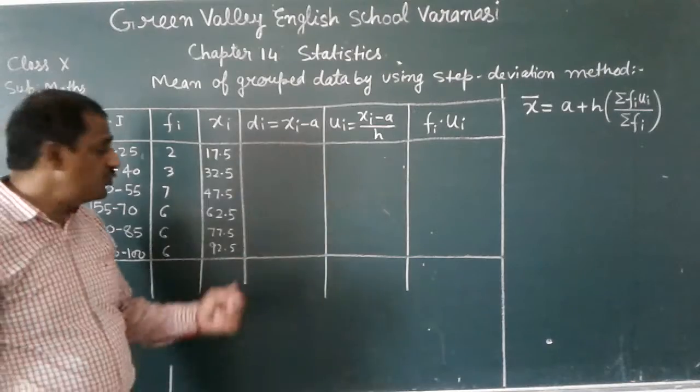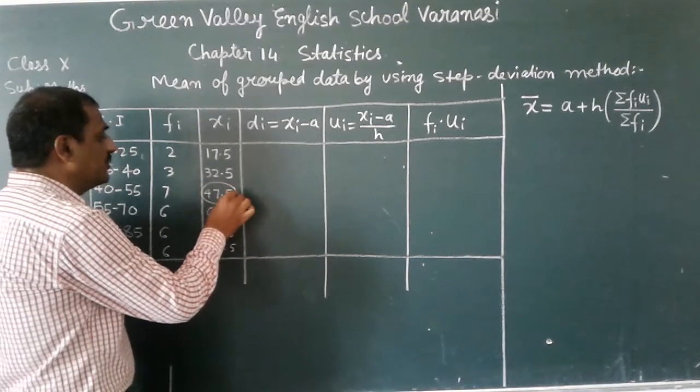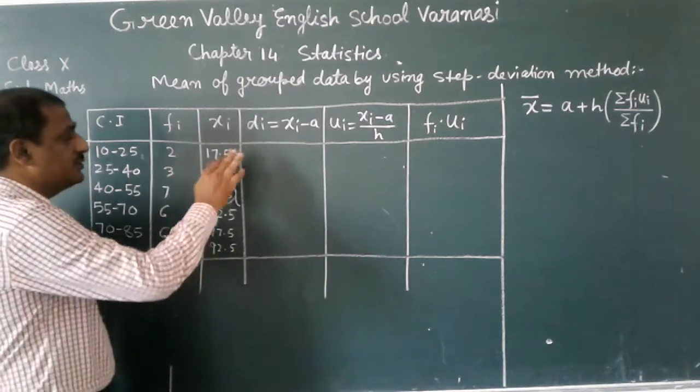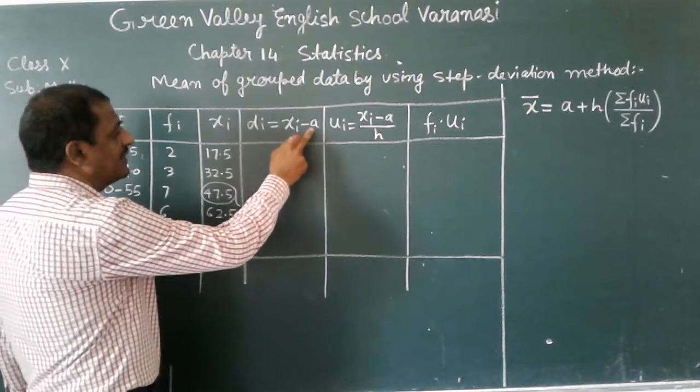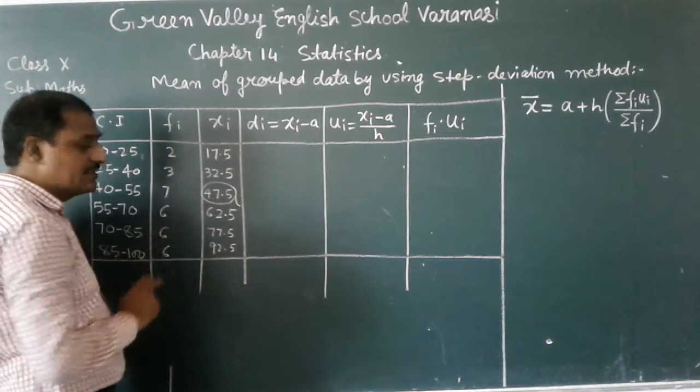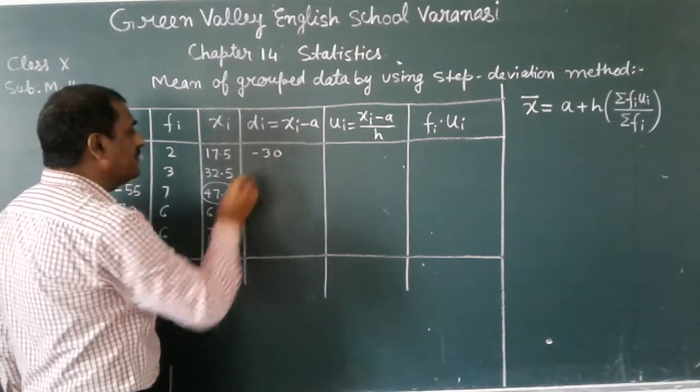Now I am going to assume mean. Here suppose this is an assumed mean, this is assumed mean. Now I am going to use this table, xi minus A. xi is 17.5, 17.5 minus 47.5, it will become minus 30.